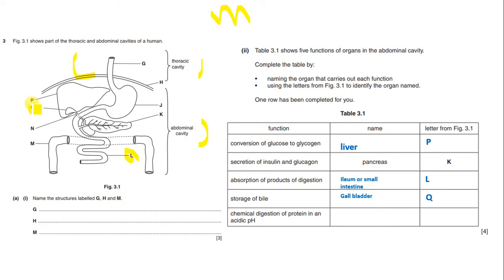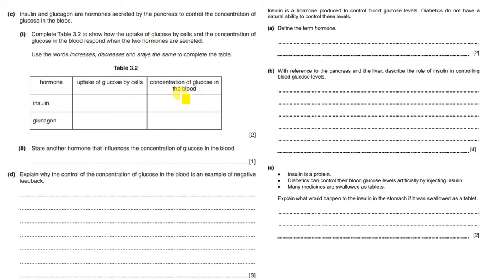Chemical digestion of protein in an acidic pH takes place in the stomach, labeled J. Insulin and glucagon are hormones secreted by the pancreas to control the concentration of glucose in the blood.